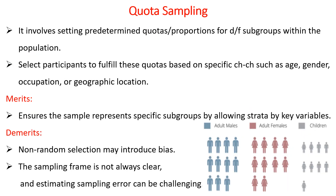Moving to the fourth type: quota sampling. Quota sampling involves setting predetermined quotas or proportions for different subgroups within a population. Participants are selected to fulfill these quotas based on specific criteria such as age, gender, occupation, or geographical location. For example, we provide a quota for adults — male adults, female adults, and children — and then take data from these groups based on convenience. This type of sampling seems parallel to stratified sampling in probability sampling, but in stratified sampling we use the randomization principle, whereas in quota sampling we do not.